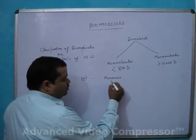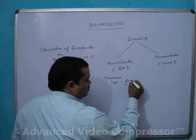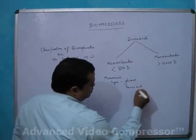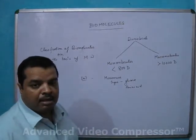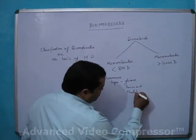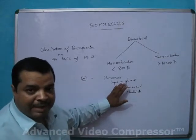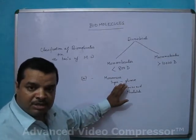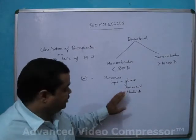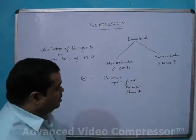Biomolecule monomers — for example, sugar molecule, in which Glucose is a monomer. Amino acid is a monomer. Nucleotide is a monomer. Glucose polymerizes to form Polysaccharide; Amino acid polymerizes to form Protein; Nucleotide polymerizes to form Nucleic acid.